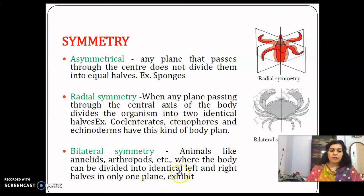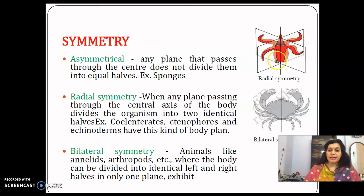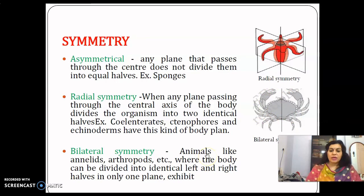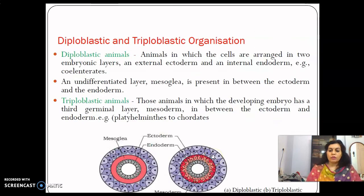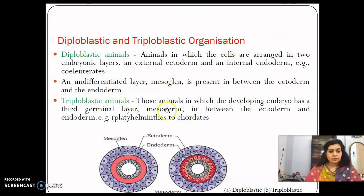In bilateral symmetry, animals such as Annelida and Arthropoda have a body that can be divided into two identical right and left halves in only one plane. So radial symmetry allows equal halves in any plane, whereas bilateral symmetry allows it in only one specific plane.